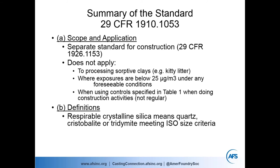The standard begins with a scope. This is a general industry standard — 29 CFR 1910.153. OSHA has broken out the construction sector in a separate standard, 1926.1153. The general industry standard does not apply to processing clays like kitty litter, does not apply where exposures are below 25 micrograms per cubic meter, and does not apply when doing construction work using Table 1 of the construction standard — a fairly rare situation for most foundries.